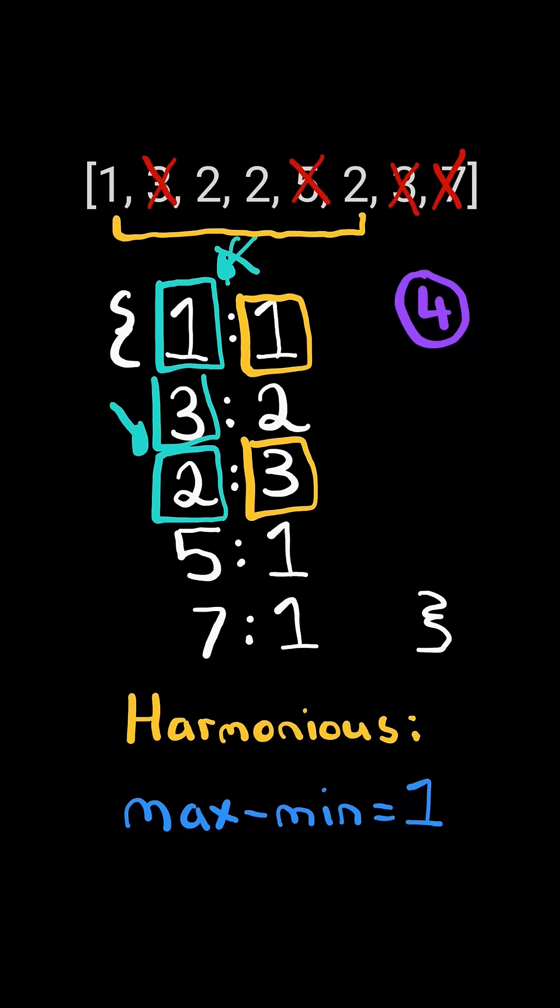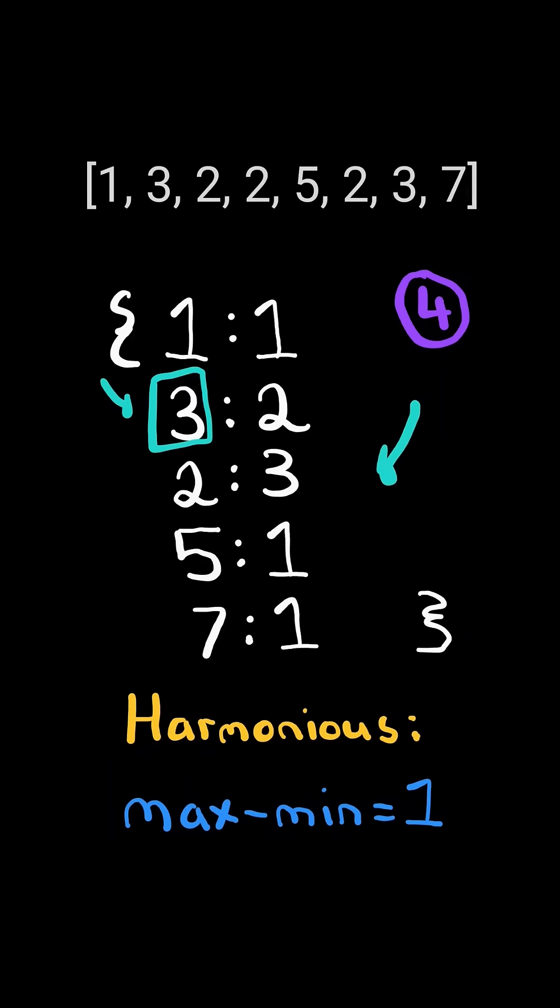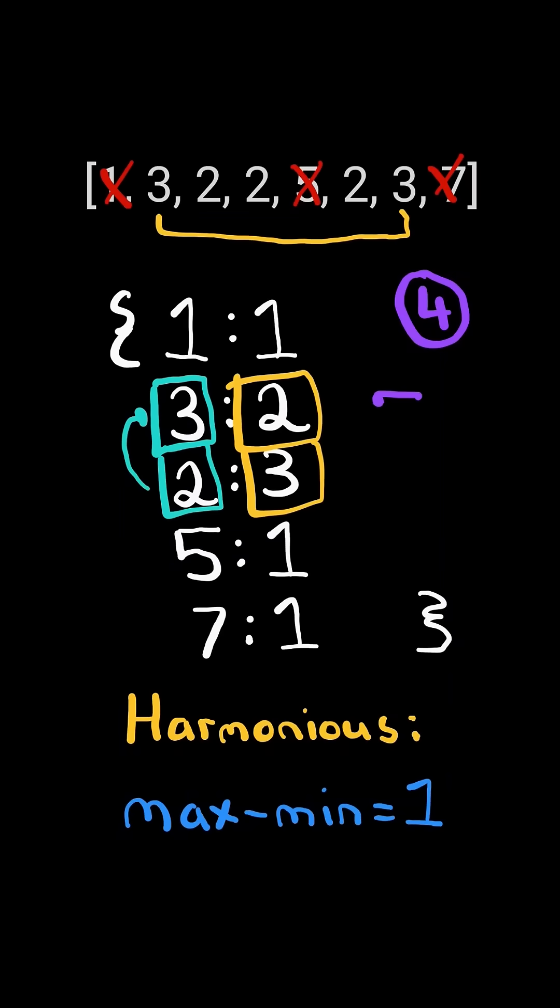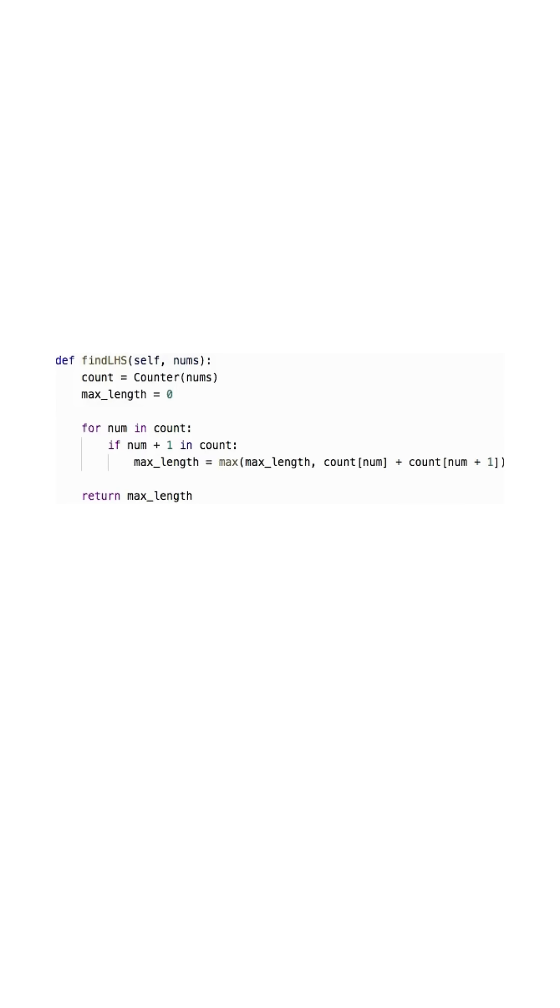We continue iterating. The number plus 1 does not exist in the map, so we continue. The number plus 1 does exist in the map, and it creates a harmonious sequence of length 5. Here's the code to do so. Please like and follow for more.